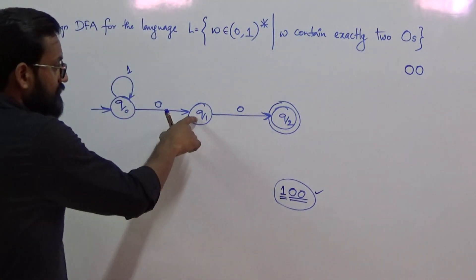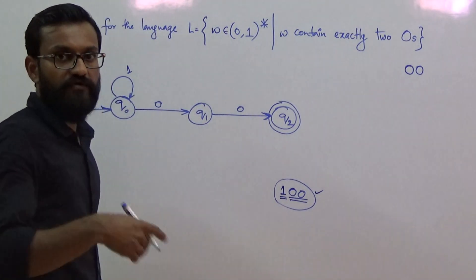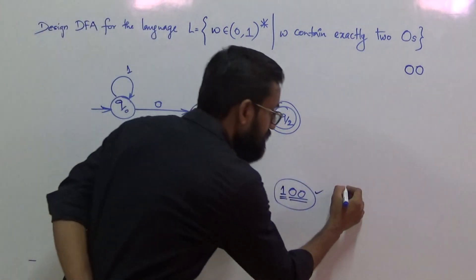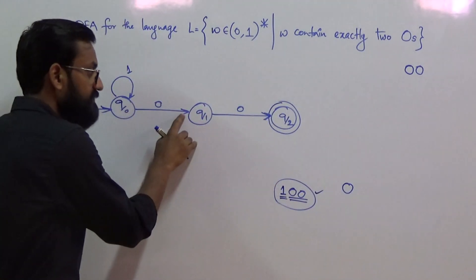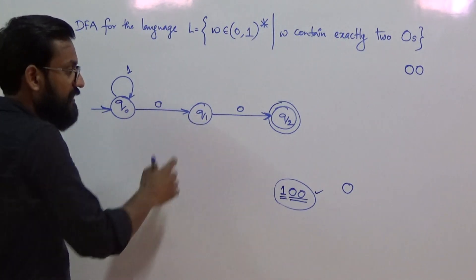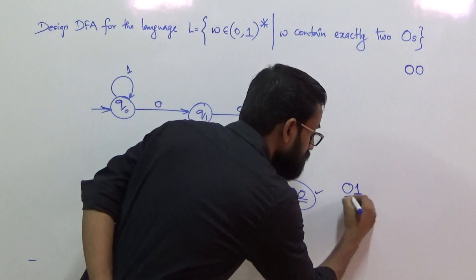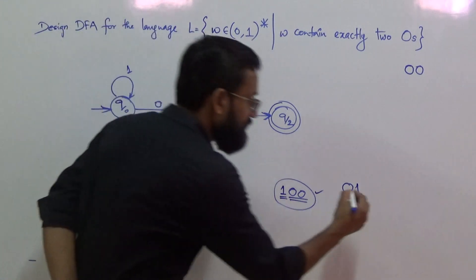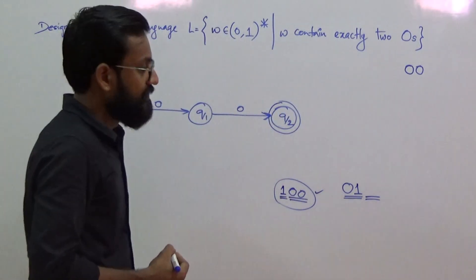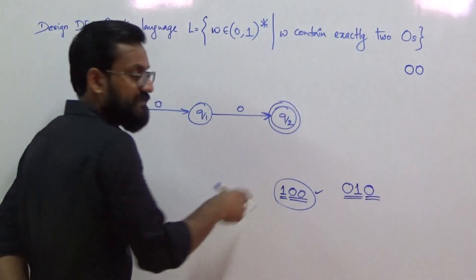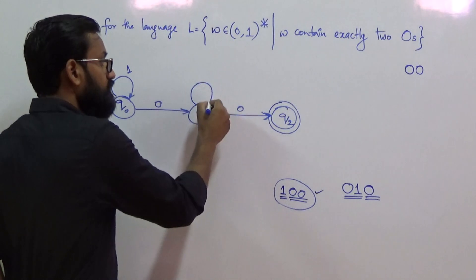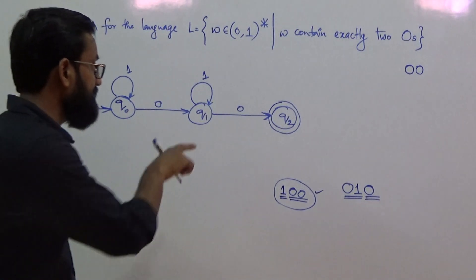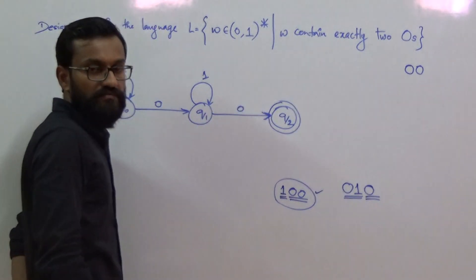Now consider q1, which is missing a 1-transition. The minimal string consumed from q0 to reach q1 is '0'. From q1, if we apply input 1, the string consumed so far is '01', and we still need one more 0 to make the string valid. So from q1, the transition on input 1 should go back to q1 — the state from which it can consume exactly one 0 to reach the final state.